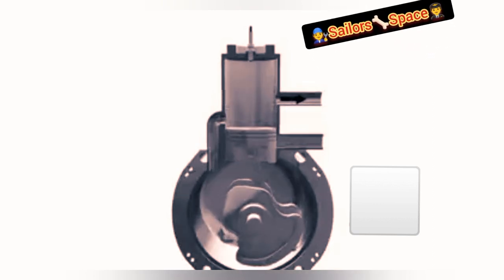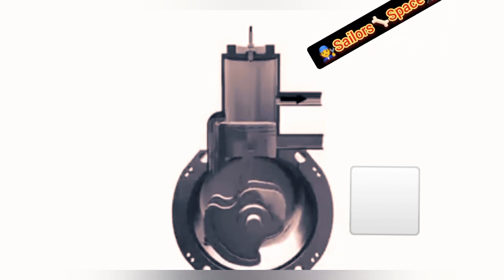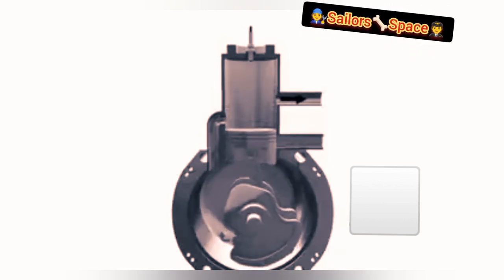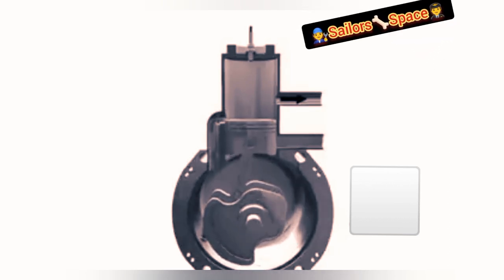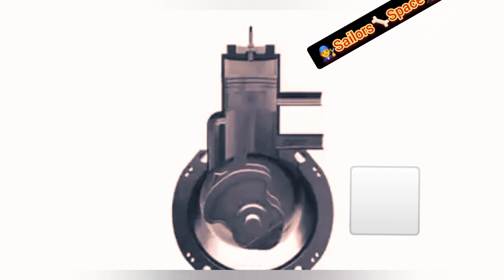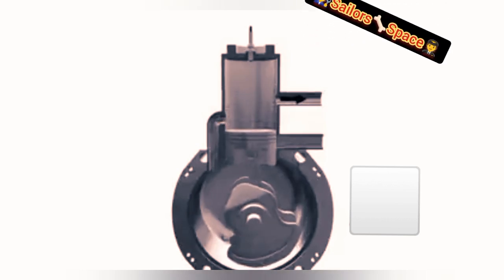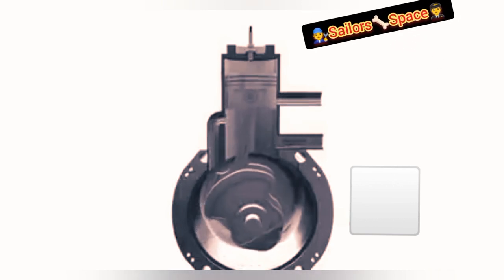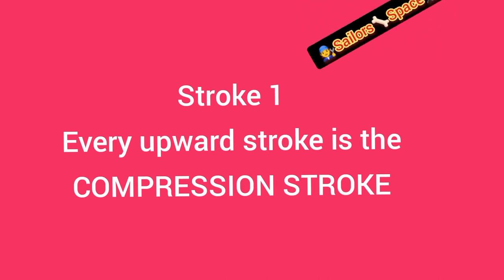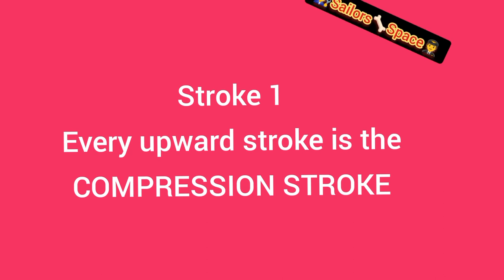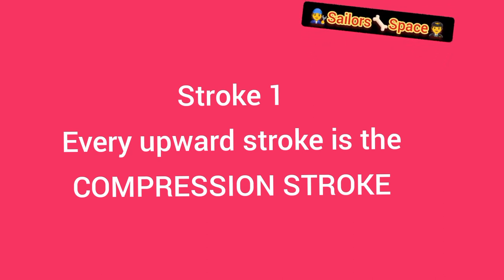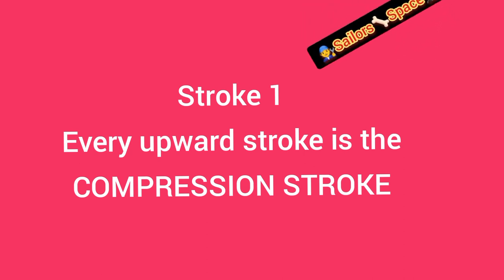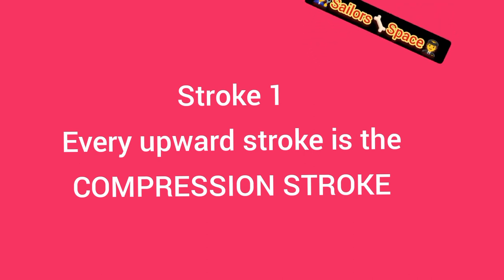The piston keeps moving down until it reaches bottom dead centre. As the crank just passes bottom dead centre the piston starts going up again, and the air trapped in the cylinder starts being compressed. At this point the piston has covered both the exhaust port and the inlet port that were earlier open. The remaining air inside the cylinder is now being compressed, raising the temperature and pressure.